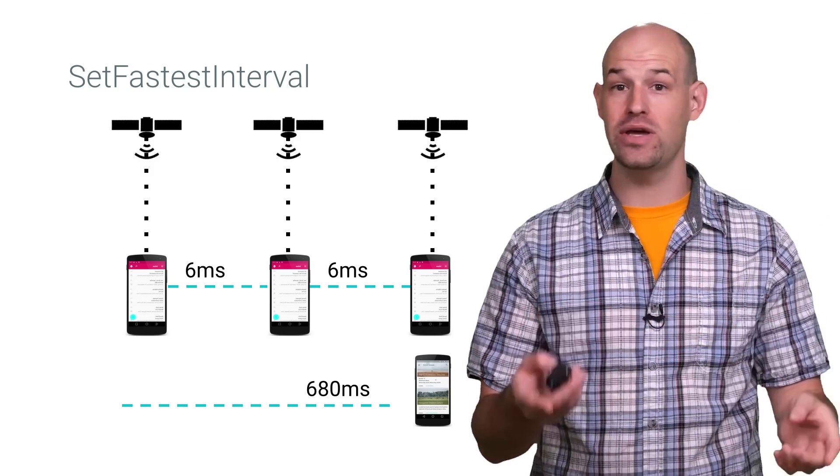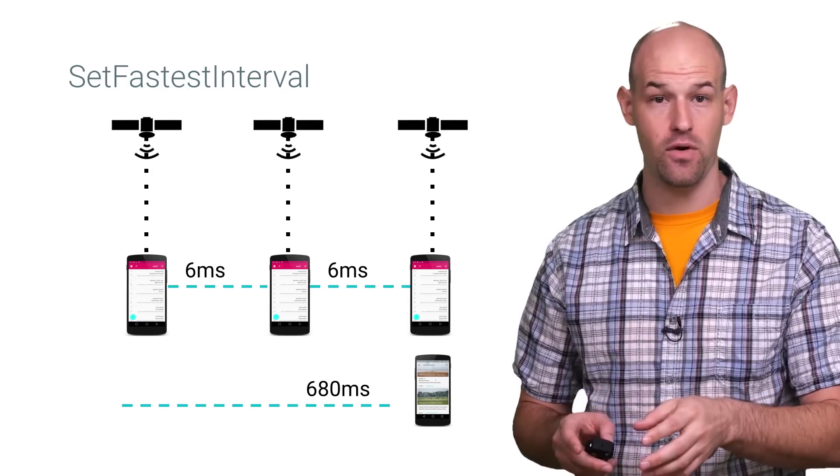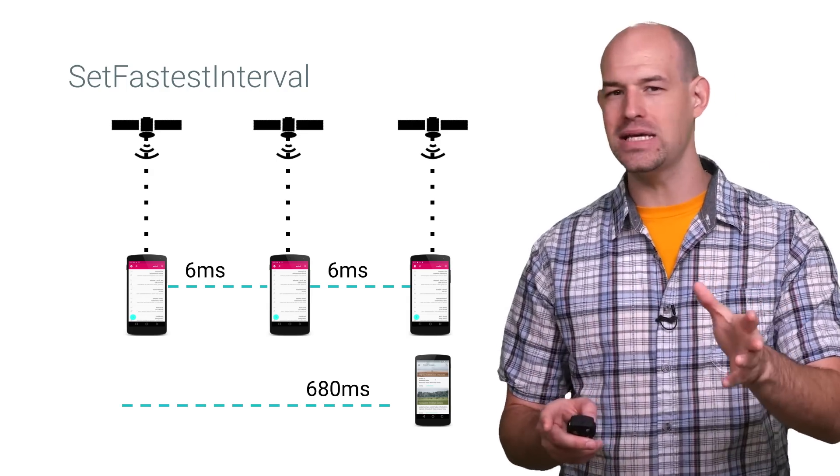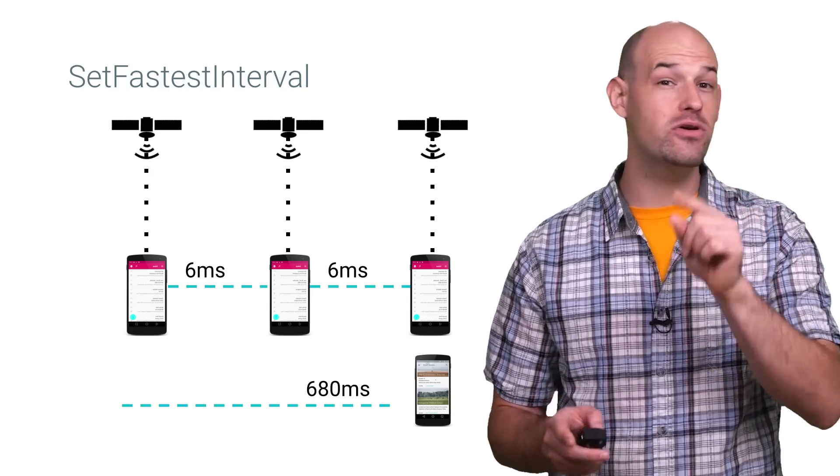This lets you throttle how often you get updates that you might not be interested in or ready for. So your app isn't wasting time updating and processing location events when they're not actually being needed.